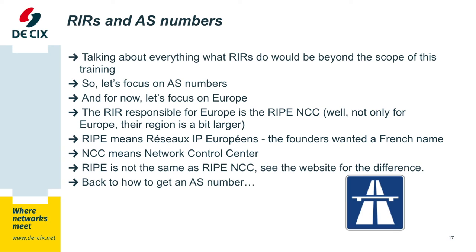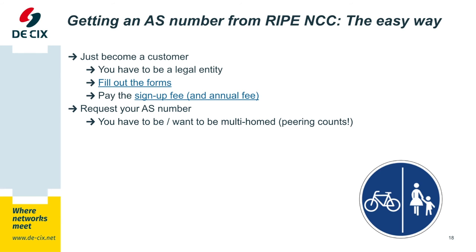The regional internet registry responsible for Europe is the RIPE NCC — that is a French acronym which I'm not going to read here. Just a reminder that RIPE is not the same as RIPE NCC. The RIPE NCC is the entity that hands out AS numbers. The easiest way to get an AS number is to become a customer of the RIPE NCC. You have to be a legal entity, fill out the forms, pay the fee, and request the AS number. They want some justification — you need to tell them you want to be multi-homed and want to peer. You should have your AS number within a week or two.